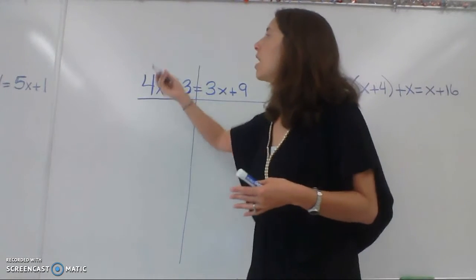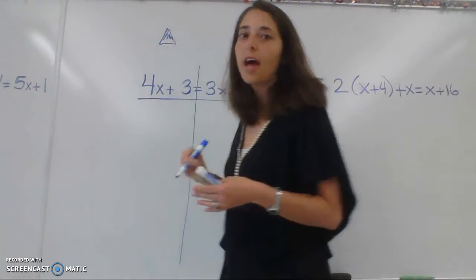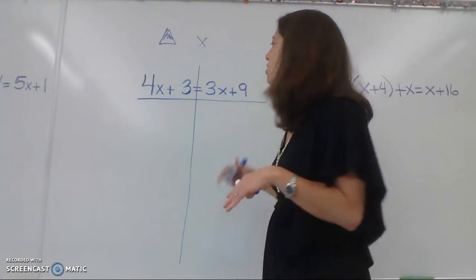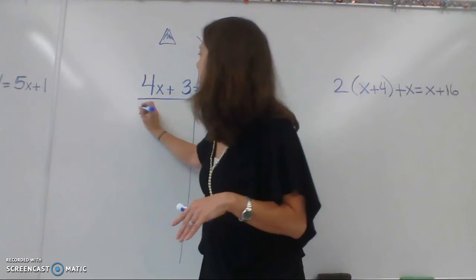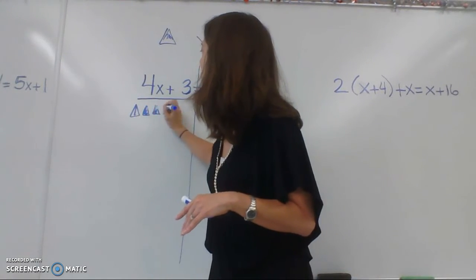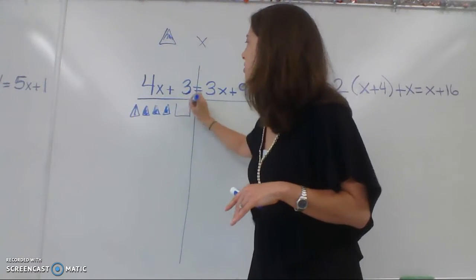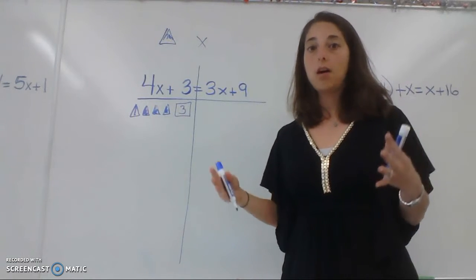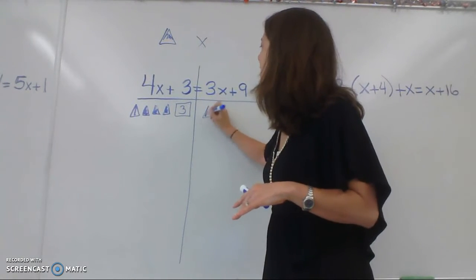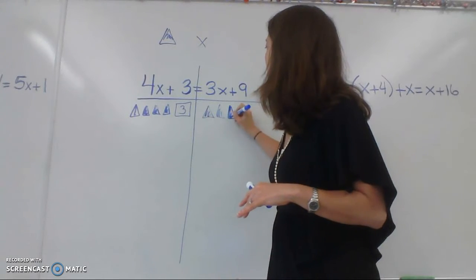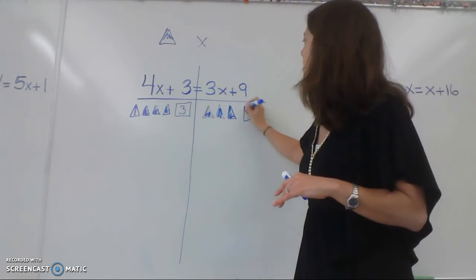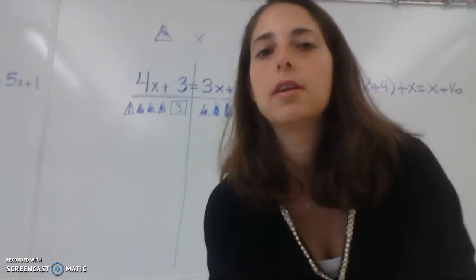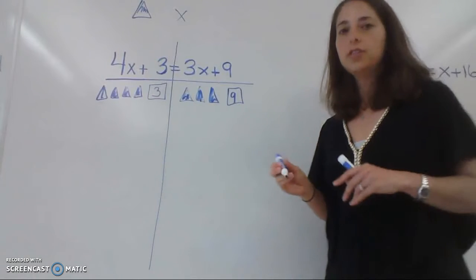For the X-men, you can either draw little triangles or you can draw X's. It really doesn't matter. I'm going to start with the triangles. So I would have four X-men, one, two, three, four, plus we would have the number cube of a three. So I'm literally drawing exactly what would have been on our balance. On the other side, I have three X-men, one, two, and three. And a nine. So if you take a look, this is what we would have put on our balance.